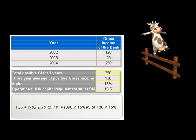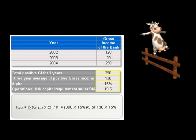See now how simply we calculate the operational risk capital charge under the basic indicator approach. First, we take the total positive gross income for the latest three years and add these positive gross income figures together — the result, as shown here, is 390. Next, we divide 390 by 3, representing the three years, giving a result of 130. We then multiply 130 by 15%, which reflects the alpha set by the Basel Committee, and the result is 19.5. This is the operational risk capital charge requirement under the basic indicator approach.